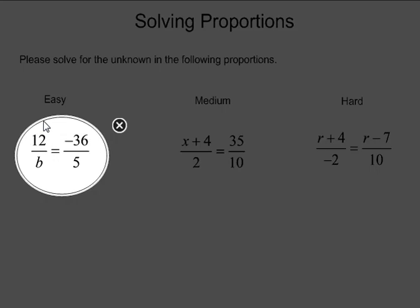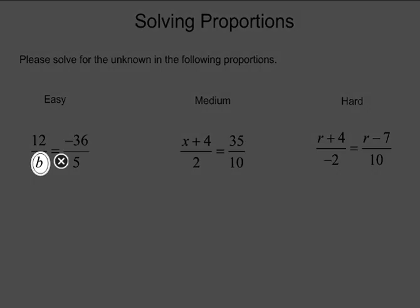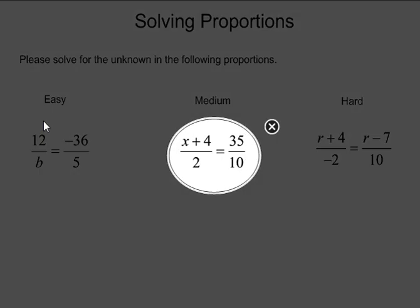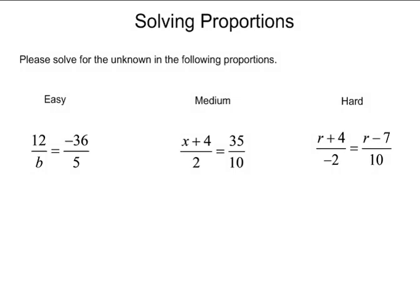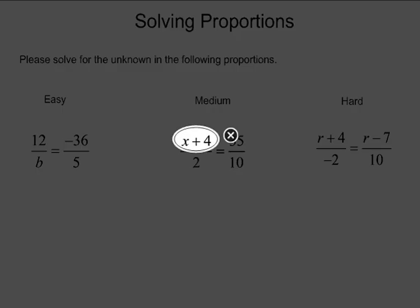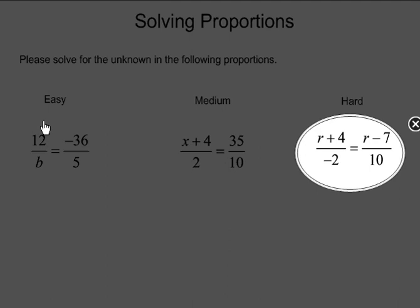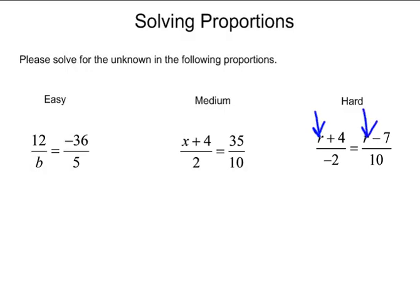Here in this first problem, we see that we have one variable — it's b — and it only appears once in the problem. That's not so bad until we move over to the medium ones where we have x, and it only appears once in the problem, if you notice, on top. But we also see that it's part of two terms, and that makes it look very different. Then in this last instance, we see that the variable appears twice. It's still a one-variable problem because the only variable is r, but it's appearing twice.